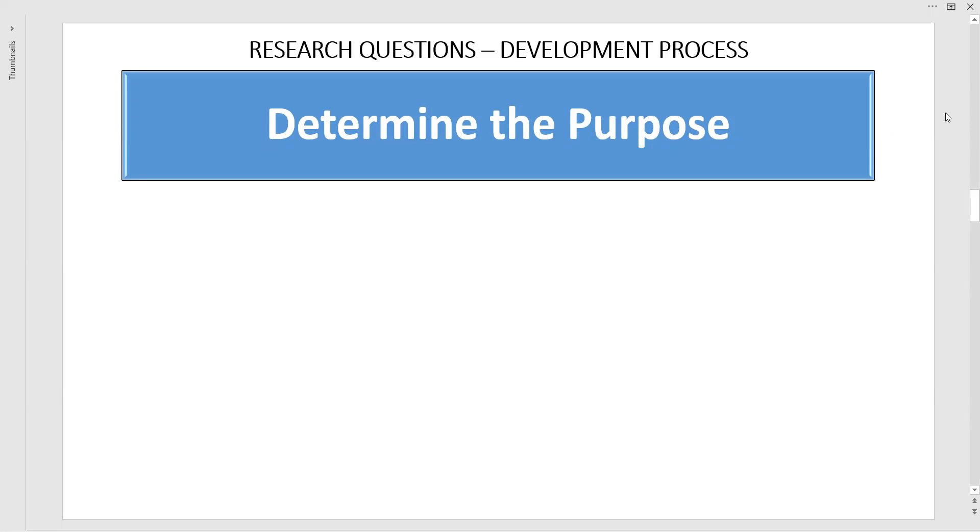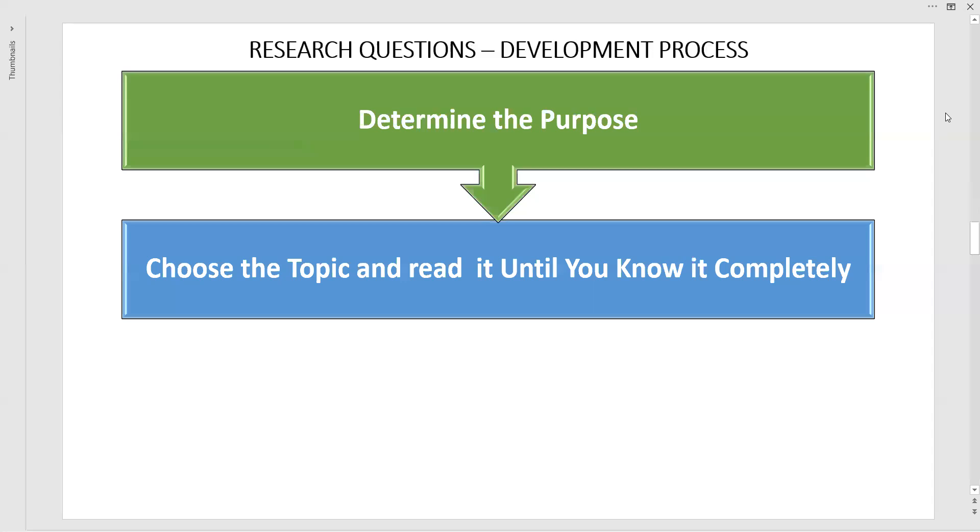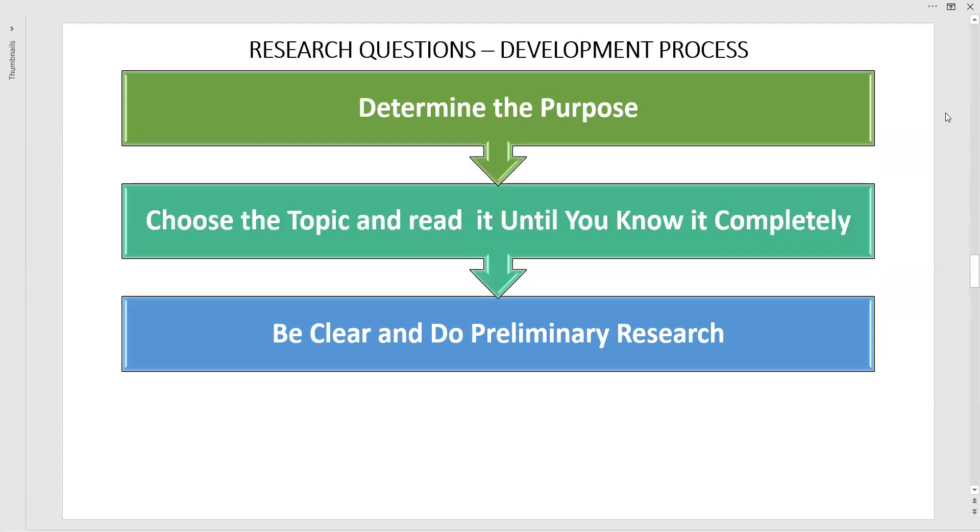Once we determine the purpose, we have to choose the topic. When we mention the purpose, we will come along with a list of topics where we have to choose one, or we can choose our own topic. Keep in mind that we should read it thoroughly until it tells us this is the topic to carry forward. The best approach is to select an interested one. If you are not interested, that might result in loss of time, effort, and your mood.